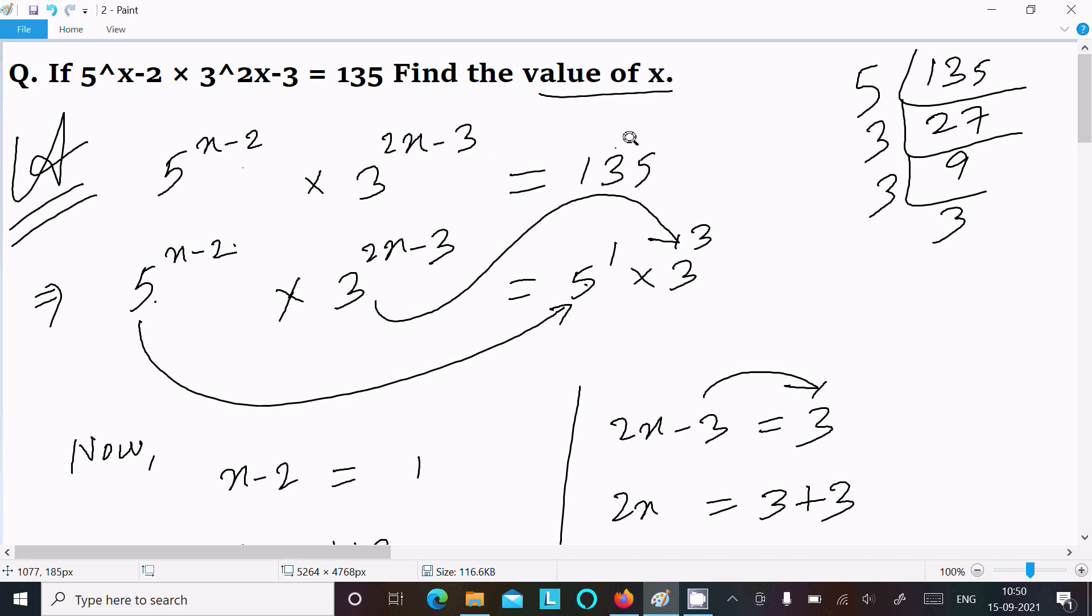Let me repeat: given 135, we can write 135 as 5 power 1 times 3 power 3. Here is the multiplication. Now we can equate 5 with 5, so 5 is the same, then equate the powers. So x minus 2 equating with 1, and 2x minus 3 equating with 3.